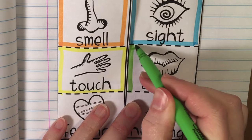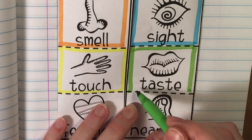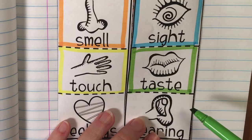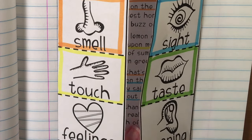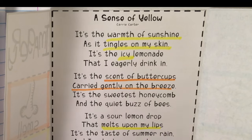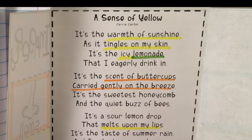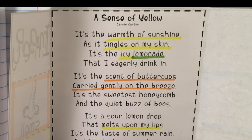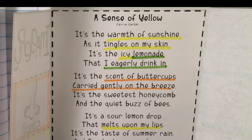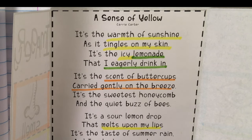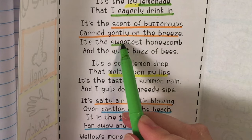The next one is taste, and taste is a fun one because you can think of any flavor — any way you can describe anything you would eat — and that's going to appeal to your sense of taste and transport you to wherever the author is talking about. Here I've got lemonade: I immediately imagine that sweet, tangy yumminess that lemonade brings to mind. "I eagerly drink in" goes right along with it because I can just imagine taking a big gulp of that yummy sweet-sour lemonade when I'm hot on a summer day — that really appeals to my sense of taste.